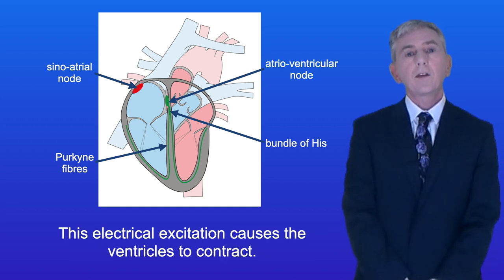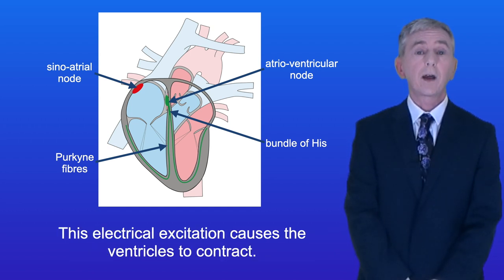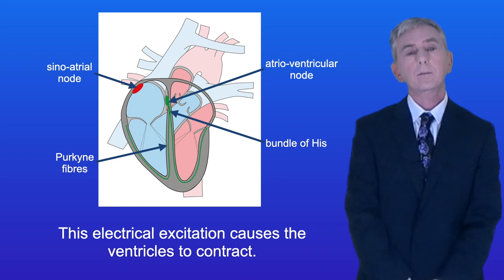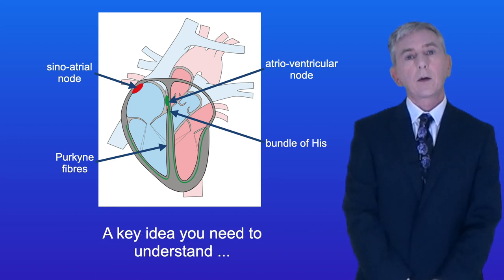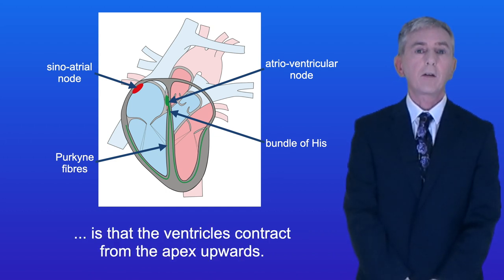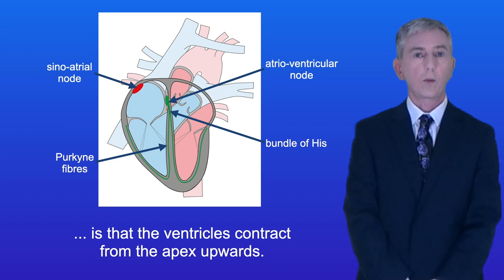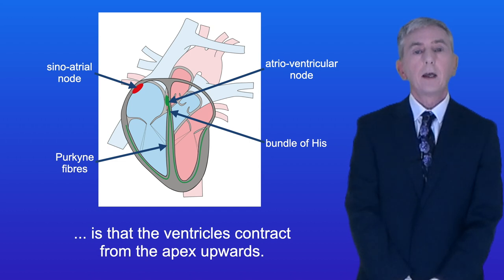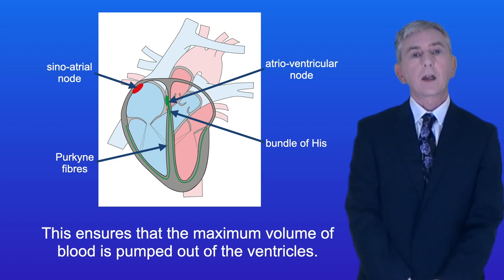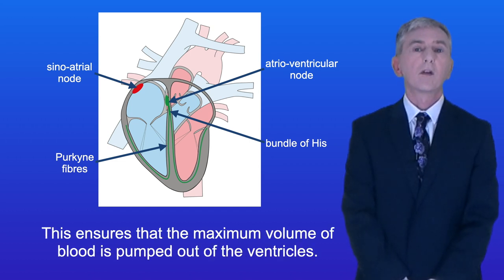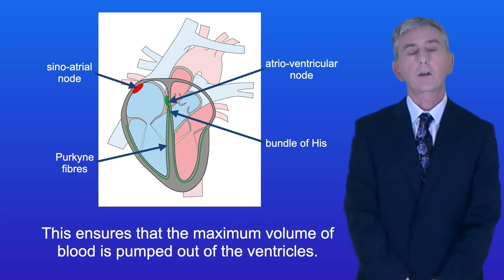This electrical excitation causes the ventricles to contract. A key idea you need to understand is that the ventricles contract from the apex upwards, and this ensures that the maximum volume of blood is pumped out of the ventricles.